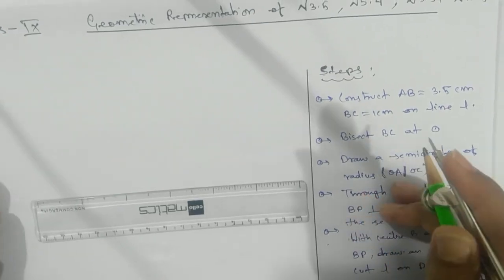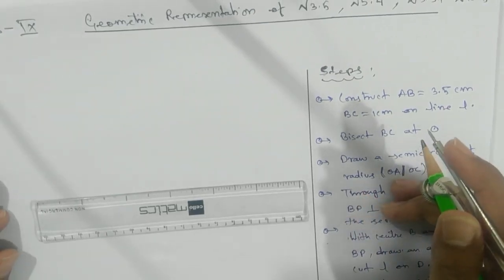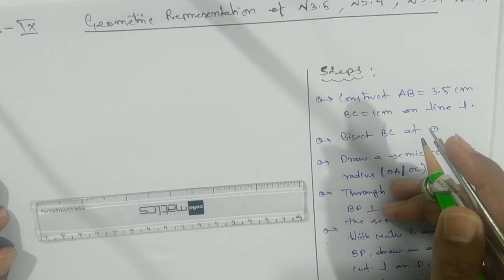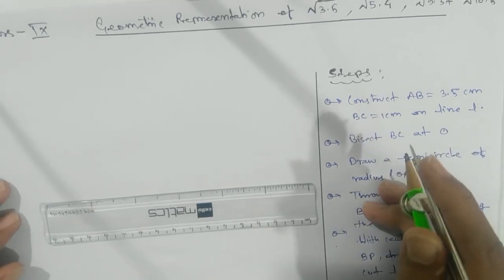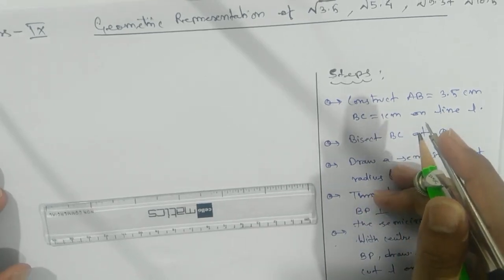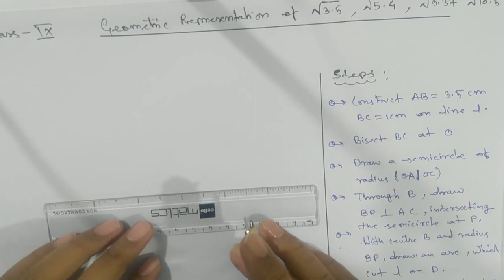Namaste students. Today we're going to see geometric representation of √3.5, √5.4, √9.37, and √10.5. Here we'll start with √3.5. First, you have to draw...